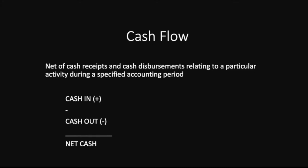Cash flow is the net of cash receipts and cash disbursements relating to a particular activity during a specified accounting period. All the cash inflows — the receipts — are added to your bank or cash balance, and all the disbursements of checks prepared are a cash outflow. In summary, cash inflow minus cash outflow equals your net cash balance for the specified accounting period.